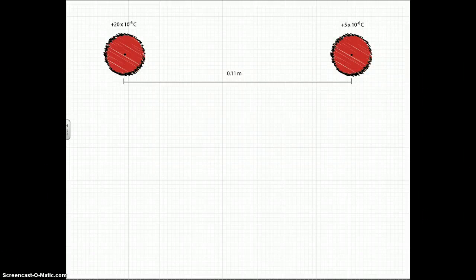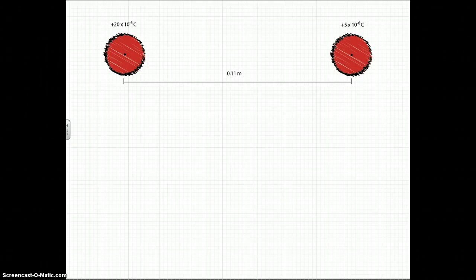So here we have a superposition and equilibrium problem, and we have two positive charges. On the left we have a 20 micro coulomb charge, positive, and we have a 5 micro coulomb charge on the right. They're separated by a distance of 0.11 meters.